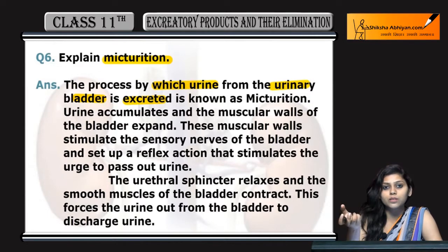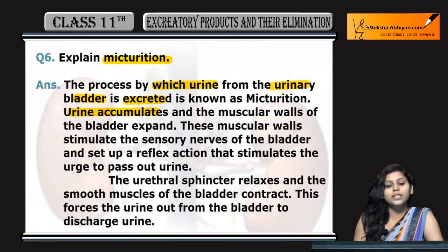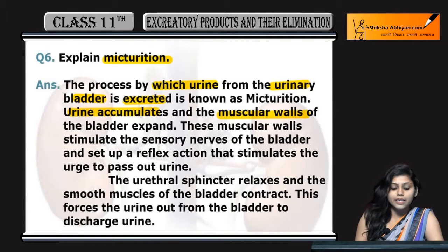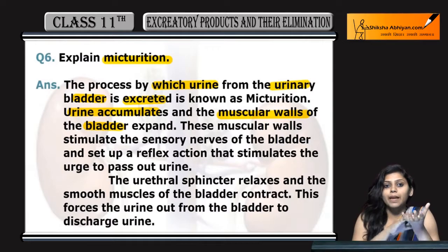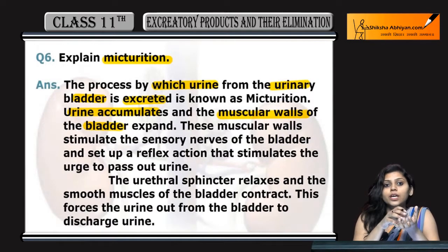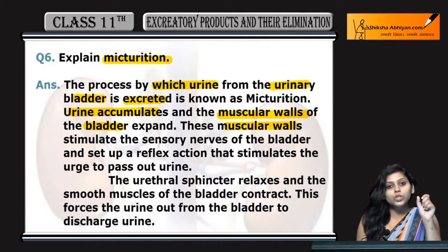Urine accumulate ho jata hai muscular walls mein bladder ki, jiski wajze se bladder expand kar jata hai. Urinary bladder hai, vahaan pe urine accumulate ho gaya, urinary bladder expand kar jata hai.